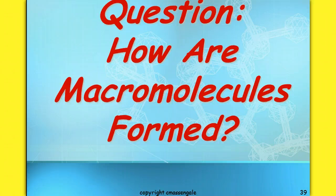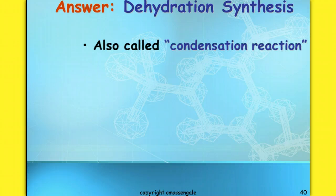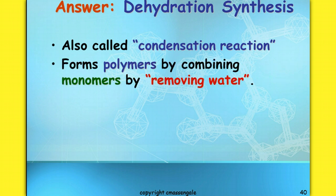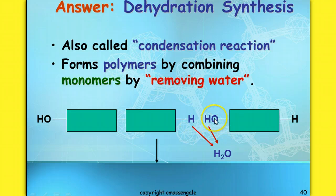The question is how are macromolecules formed? The answer is what we call dehydration synthesis, also called a condensation reaction. When you think of condensation, think of water droplets forming. This type of chemical reaction forms polymers by combining monomers and removing water — literally forming water. When we look at two repeating subunits combining, notice how there's a hydrogen on one side and a hydroxide on the other. When those portions combine and are removed, we get water, and a chemical bond is formed in its place.